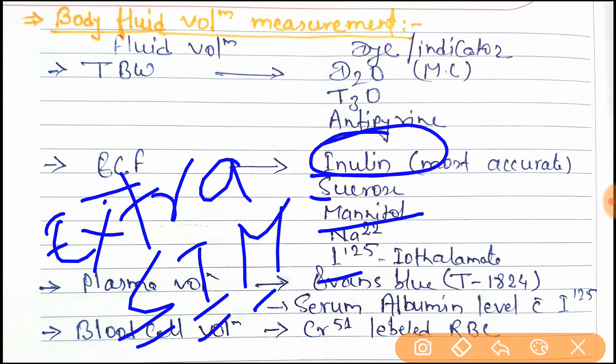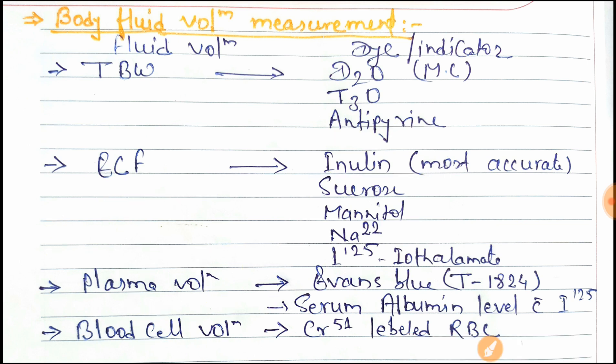Next is plasma volume. Plasma volume can be measured using the dye Evans Blue, also written as T1824, and serum albumin labeled with iodine I-125.